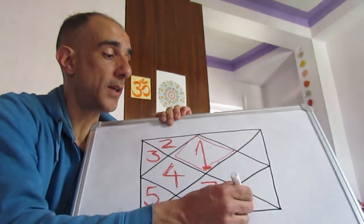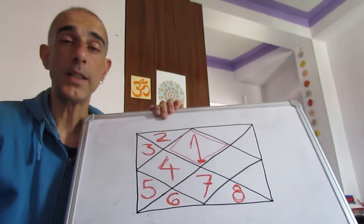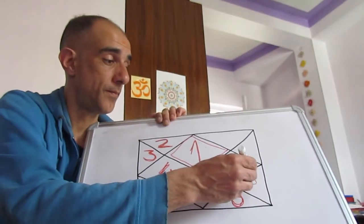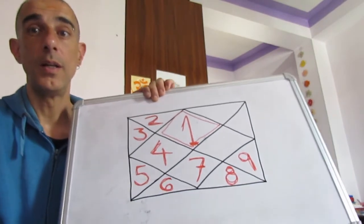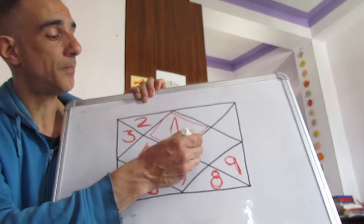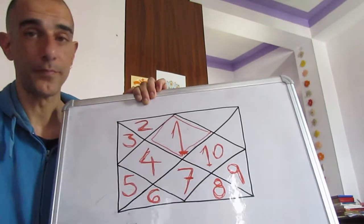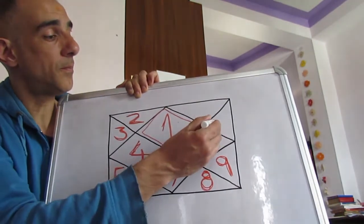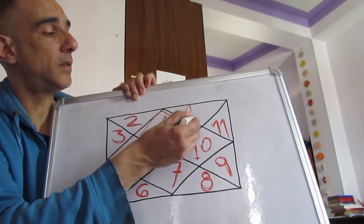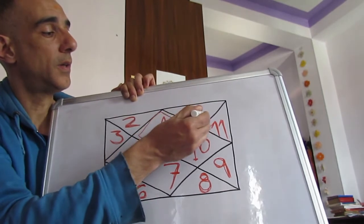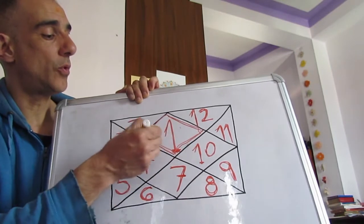Casa número ocho. Es esta de aquí. Casa número nueve. Ahí está. La casa número diez. La casa número once. Y la casa número doce y última casa. La siguiente ya es de nuevo la casa uno o el ascendente.